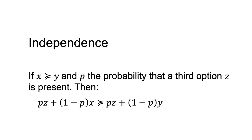More generally, under the axiom of independence, a person who mixes two lotteries with a third lottery will maintain the same order of preference when the lotteries are mixed as they had for the two original lotteries when presented independently of the third.